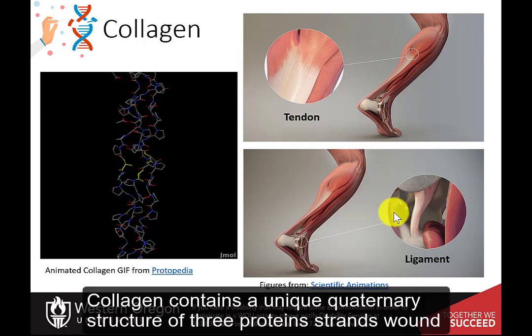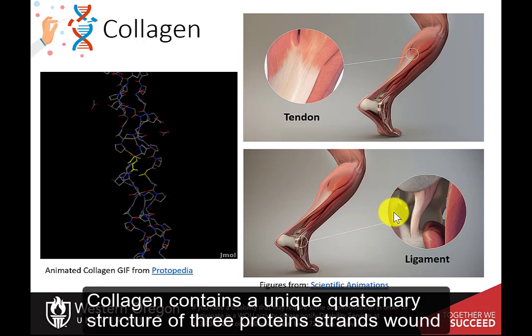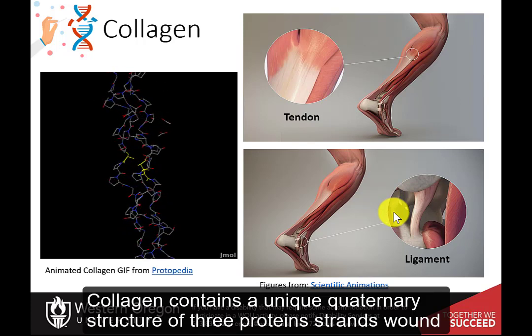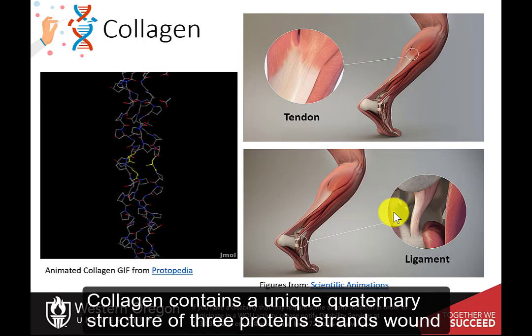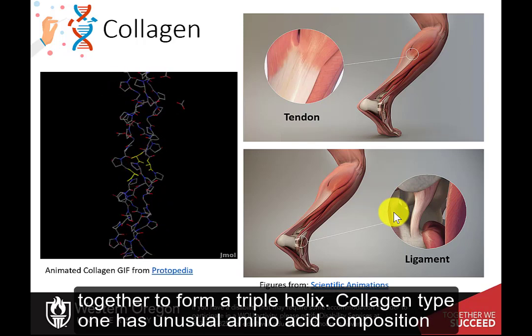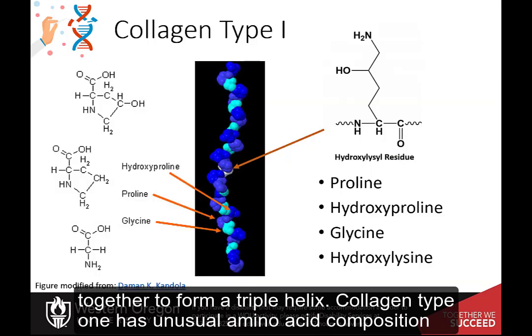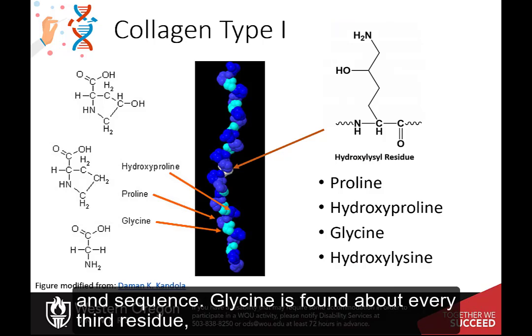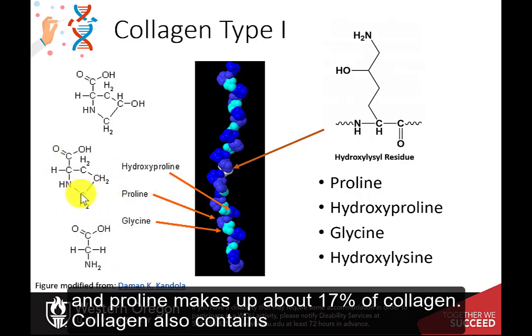Collagen contains a unique quaternary structure of three protein strands wound together to form a triple helix. Collagen type 1 has unusual amino acid composition and sequence. Glycine is found at about every third residue, and proline makes up about 17% of collagen.